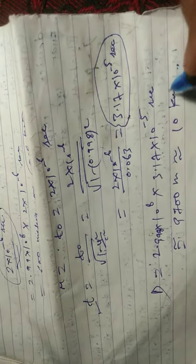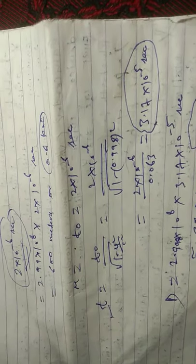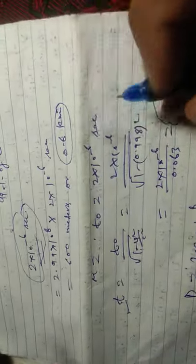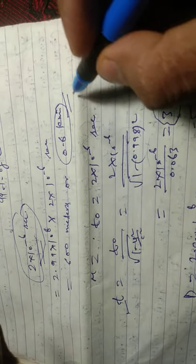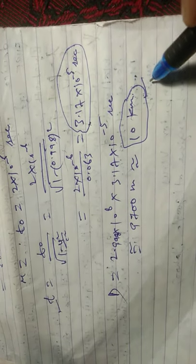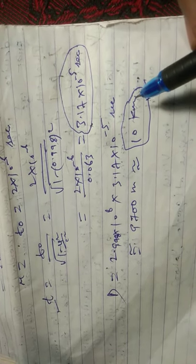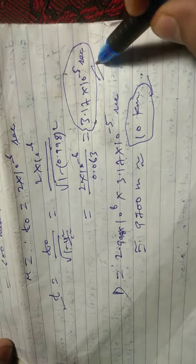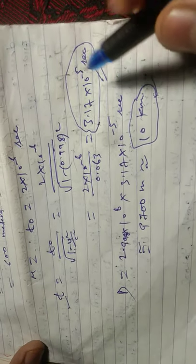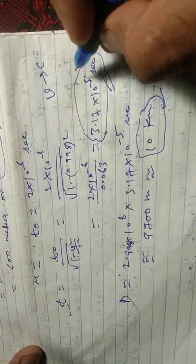So in this way, the muon travels this distance in a different frame of reference. In its own frame of reference, it can only travel 0.6 kilometers, but in the moving frame of reference, it can cover 10 kilometers distance because of time dilation. Its timing increases because its velocity is tending to c.